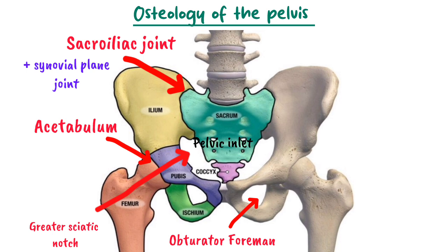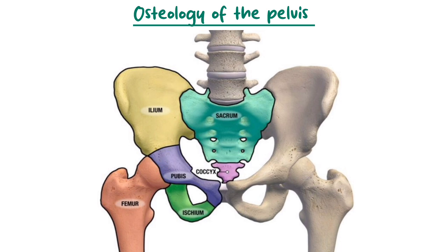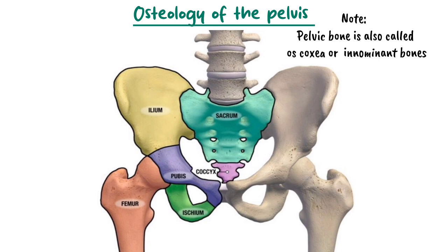Now let's talk about the landmarks found on the ilium. The ilium is the uppermost and largest portion of the os coxa. Key landmarks include: number one, the iliac crest, a prominent ridge on the superior aspect of the ilium that serves as a point of attachment for multiple muscles. Number two, the iliac fossa, a large shallow depression on the medial surface of the ilium. The iliacus muscle originates from here and inserts at the lesser trochanter of the femur.